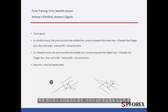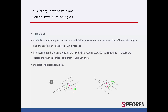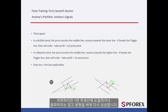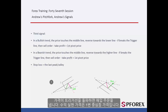In a bearish format, after the price has reached the third pivot, it will decrease but it will not cross or touch the first pivot line. So, it will change its direction towards the top again.